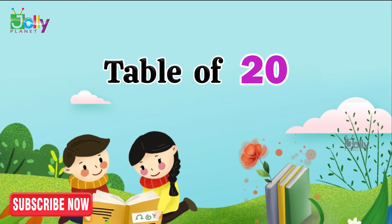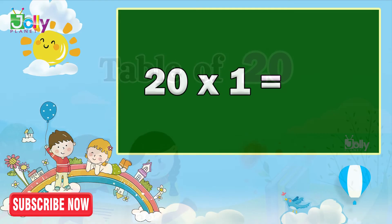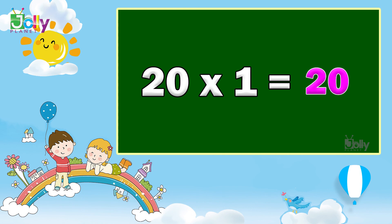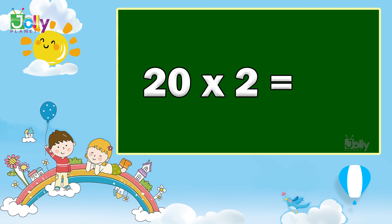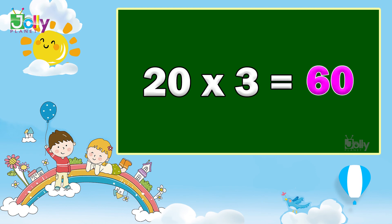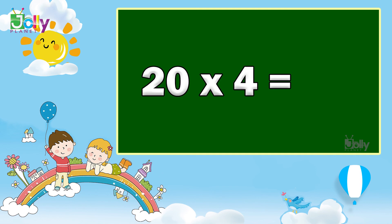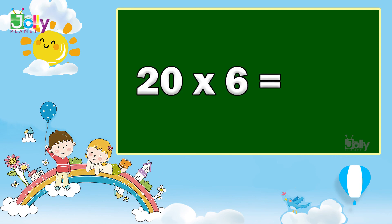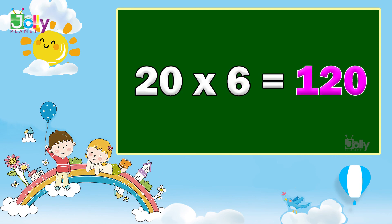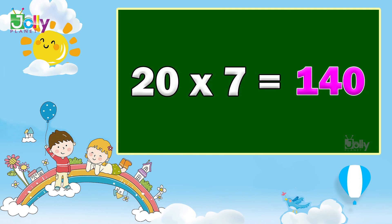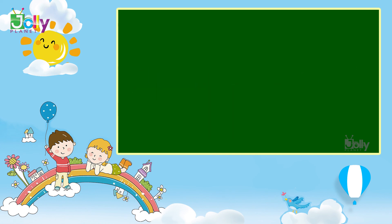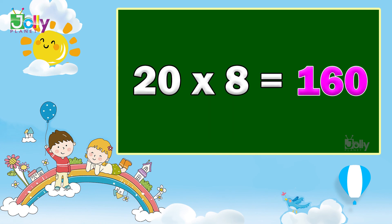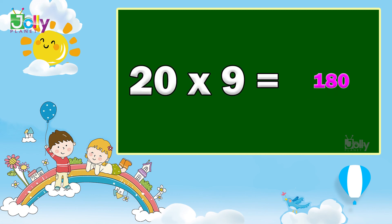Table of 20. 20 1s are 20. 20 2s are 40. 20 3s are 60. 20 4s are 80. 20 5s are 100. 20 6s are 120. 20 7s are 140. 20 8s are 160. 20 9s are 180.